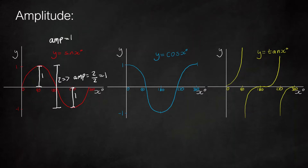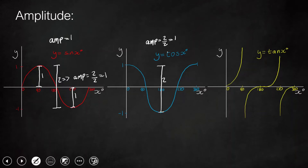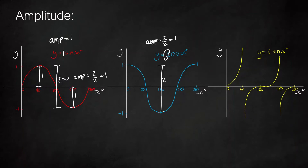For cos, using the second definition: the distance between the top and the bottom is 2, which means the amplitude is half that distance — which is 1 as well. This is because at the start of each function there's no number written, which means it's effectively a 1, and the number in front determines the amplitude.